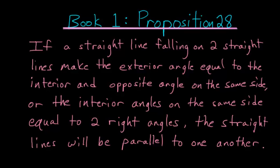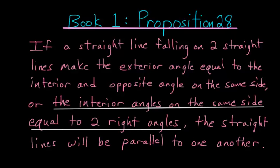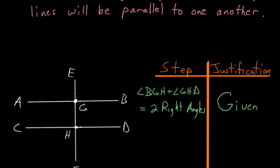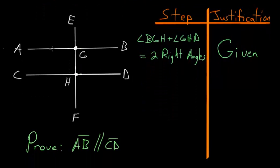For the second part of the proof of Book 1 Proposition number 28, we still have two straight lines and a third falling on top of those two straight lines. But this time we know that the interior angles on the same side are equal to two right angles. So again we have these lines AB and CD.